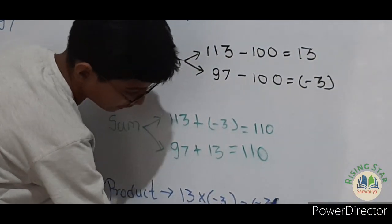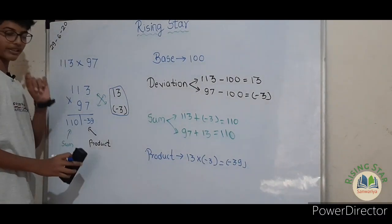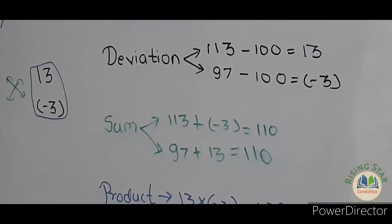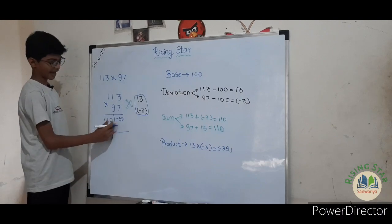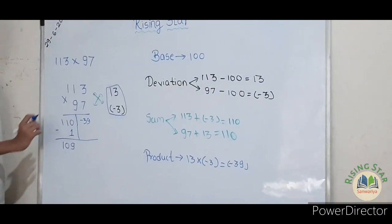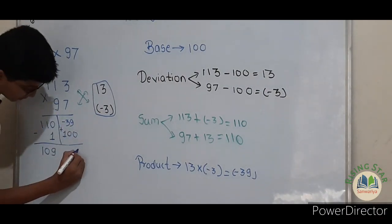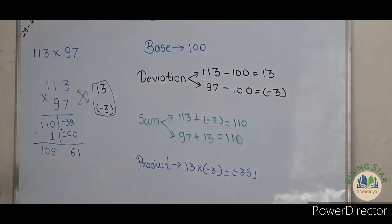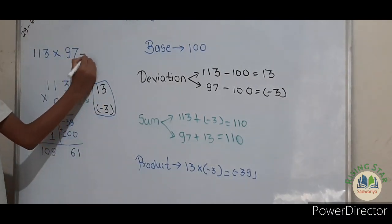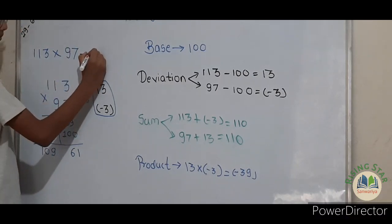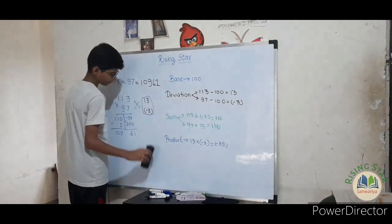Write minus 39 here. But this can't be the final number, so you have to add one more step: subtract 1 from the number on the left side, so here will come 109. Then add the base 100 to the product side, giving 96 on that side. So the answer is 113 into 97 equals 10,961. You can check it in a calculator.